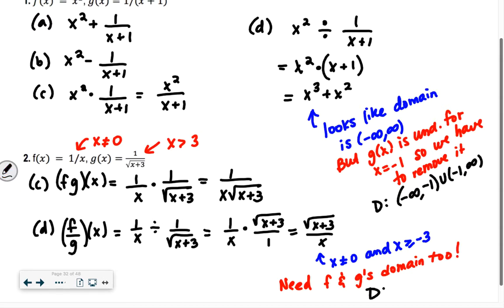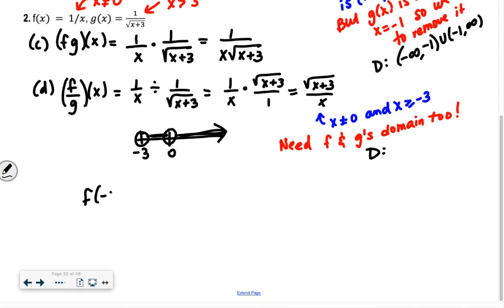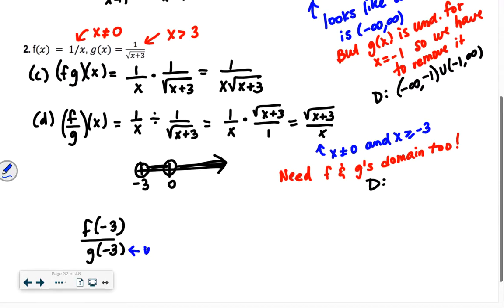So our final domain is x can't be 0, and x has to be greater than negative 3, but can't include negative 3. Our domain is going to be parenthesis negative 3 to 0, union 0 to infinity. You're looking at the final domain, but you're also considering what the initial domains were as well.